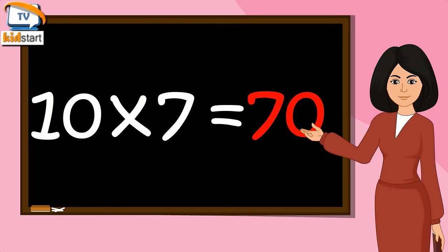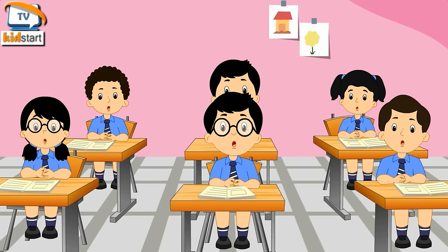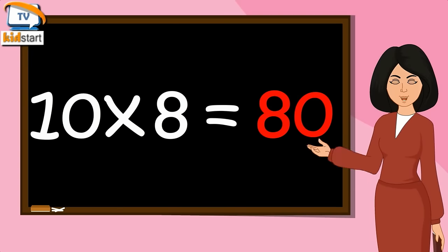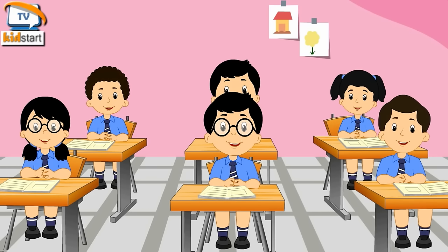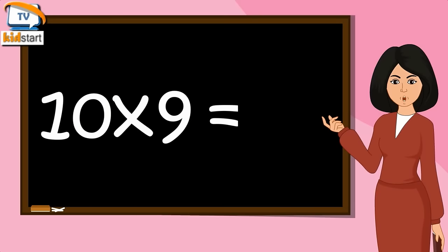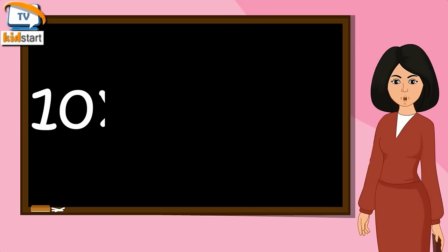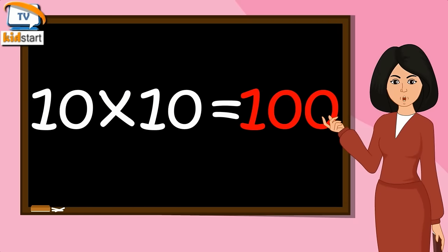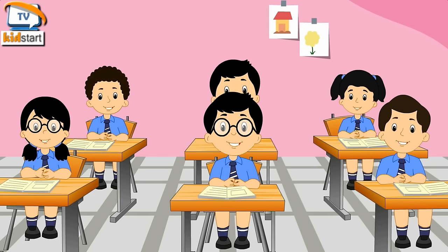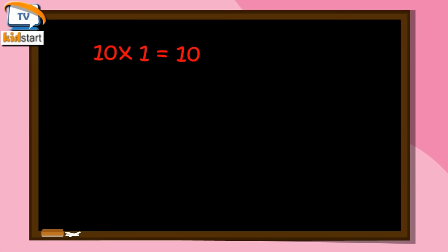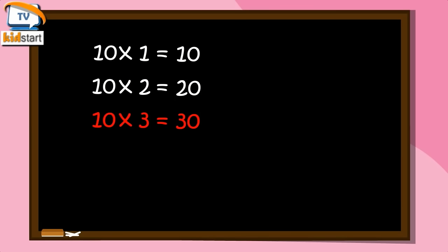Ten sevens are seventy. Ten eights are eighty. Ten nines are ninety. Ten tens are one hundred. Ten ones are ten. Ten twos are twenty. Ten threes are thirty.